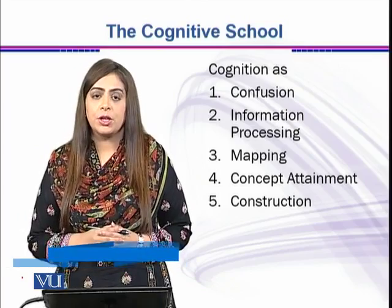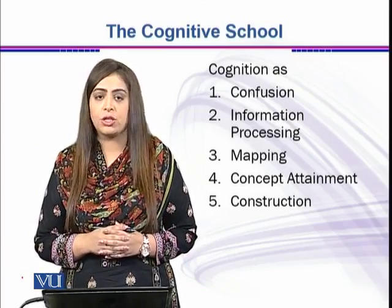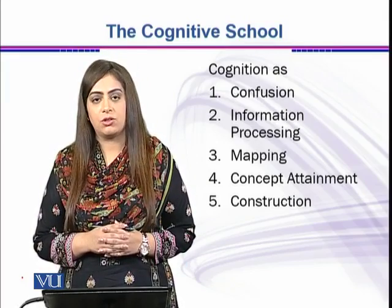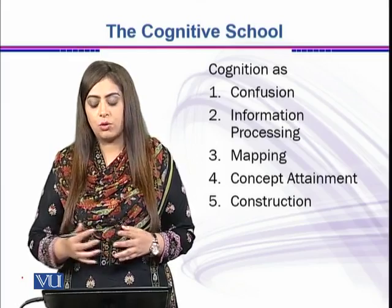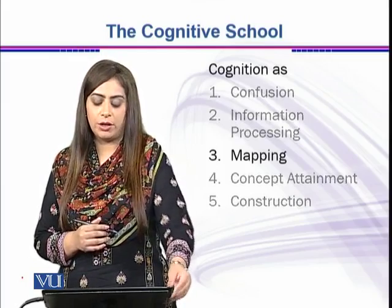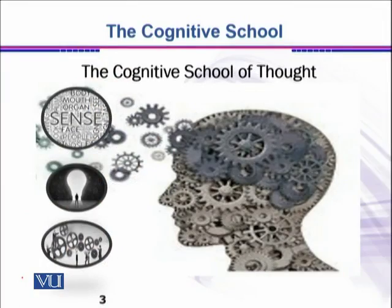In our previous video, we told you that cognition can be seen as confusion, information processing, mapping, concept attainment, and construction. We are having this overview of all these aspects one by one. In this video, we will only focus on cognition as mapping. Recall the picture in which I told you that cognition is a mental process which is highly influenced by experiences, thinking process, and senses.